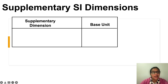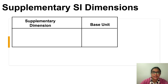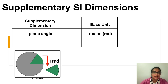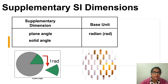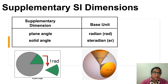In addition to the seven fundamental units, there are two supplementary units: plane angle and solid angle. The plane angle unit is radian, with symbol rad. The solid angle unit is steradian, represented by sr.